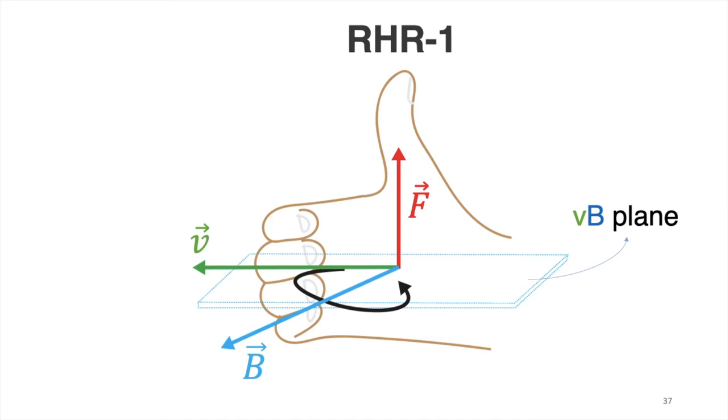So to determine the direction of magnetic force, you just have to point your fingers to the direction of the velocity vector of the charge or the current. And then the palm should point to the direction of the magnetic field. When you try to curl your fingers towards your palm, then wherever your thumb points to is the direction of the positive magnetic force.